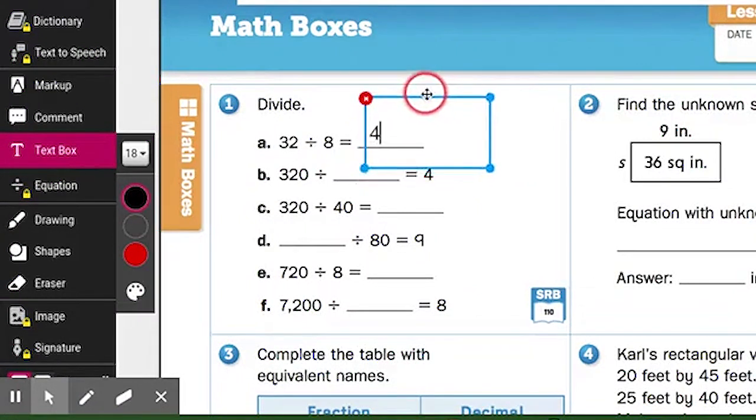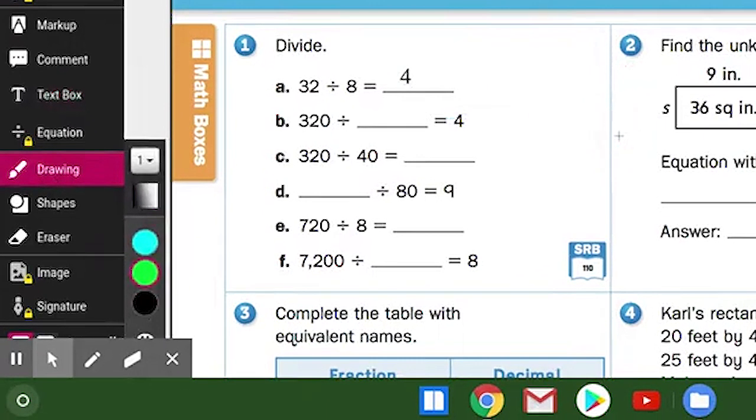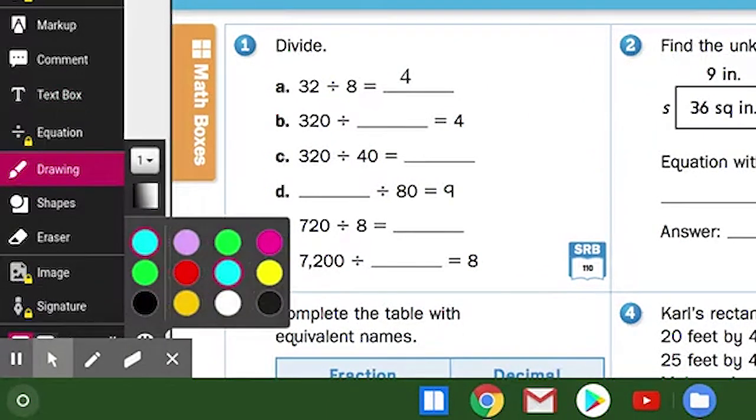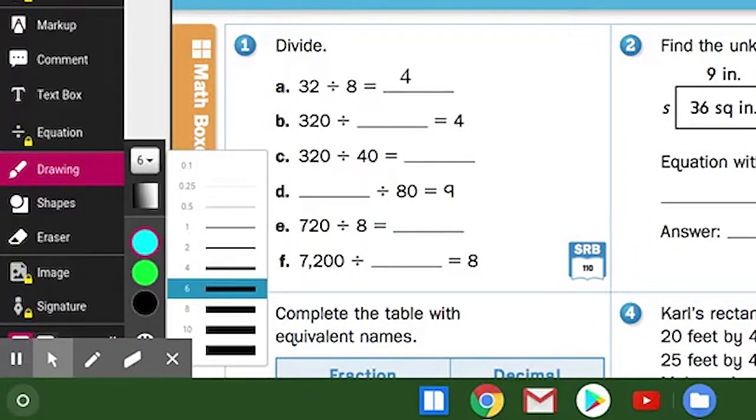When you go to drawing, you can choose what color. Where it says 1%, you click it or use your cursor to select however big you want it to be. You can change what color you want once you start using drawing.